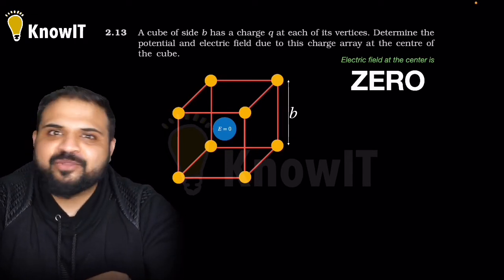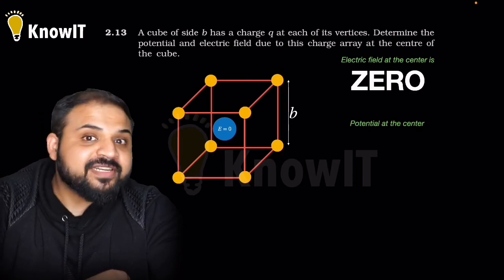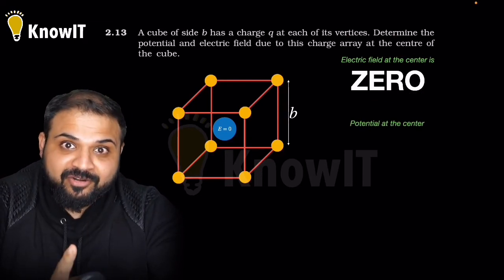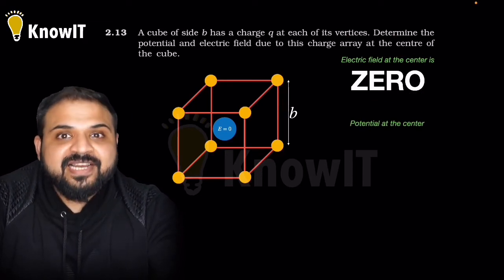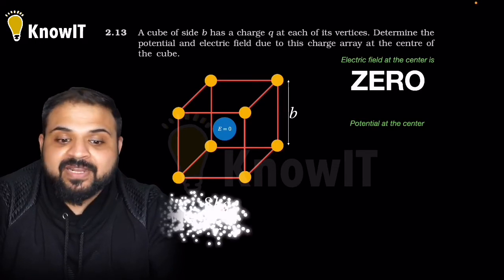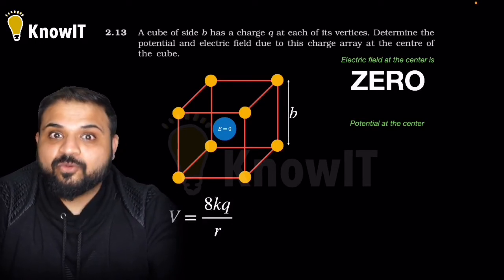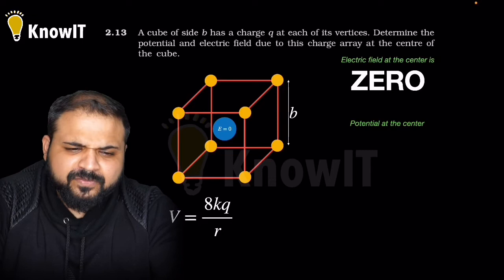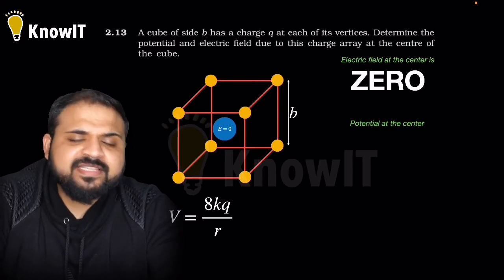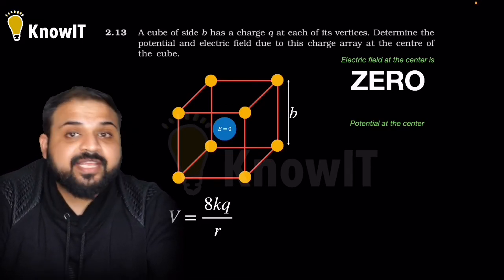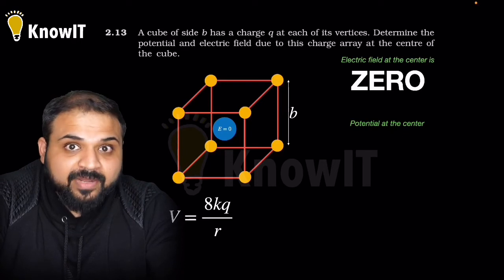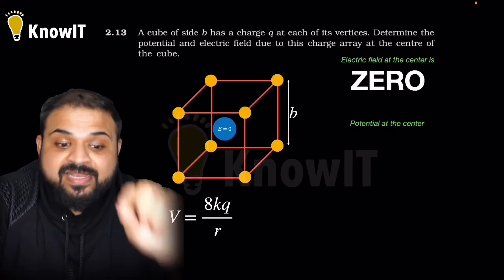Now talking about potential, potential is not a vector quantity, so potential due to all charges will add up. But you have to pay attention to the distance r. The potential formula is very simple - there are eight charges, so 8kQ by r. But the work is not done yet because the r distance is not given to us.